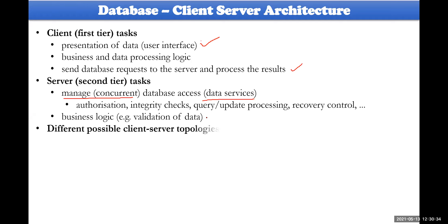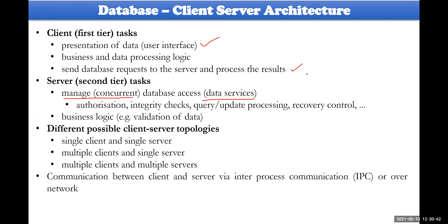There are different kinds of database server configurations: single client and single server, multiple clients with a single server, and multiple clients with multiple servers. Inter-process communication can also be done via network.